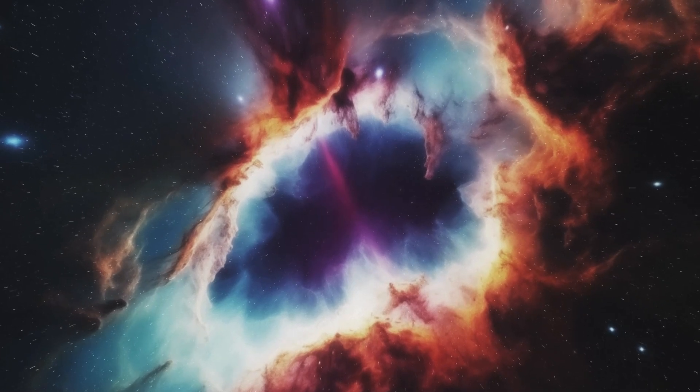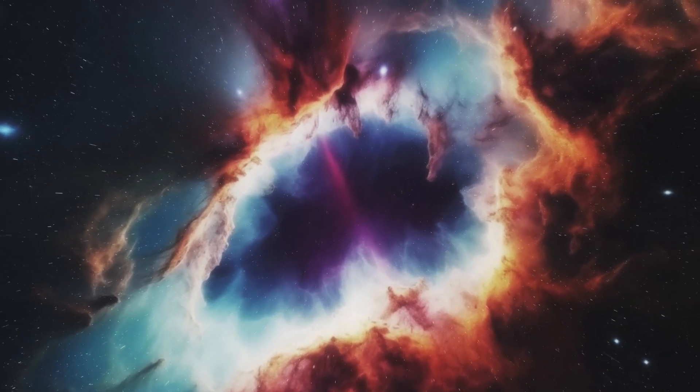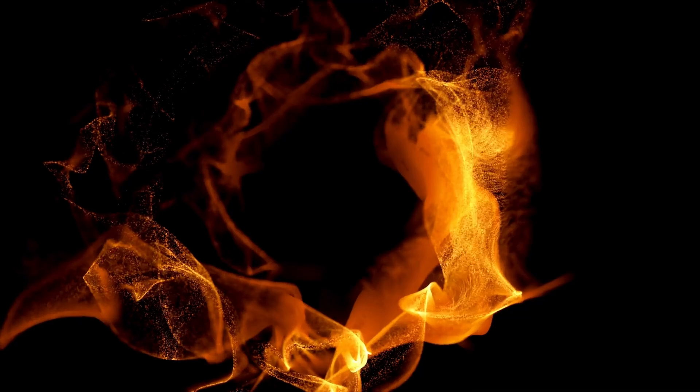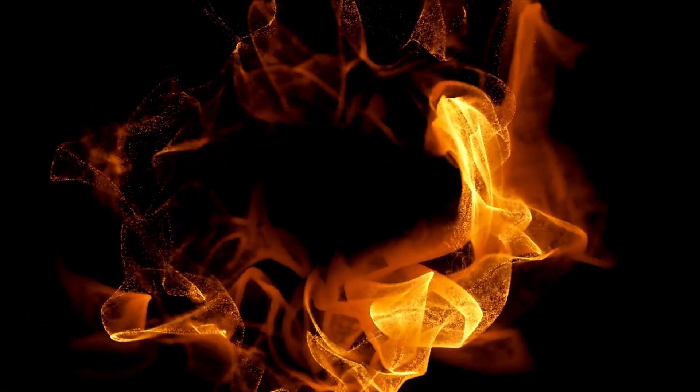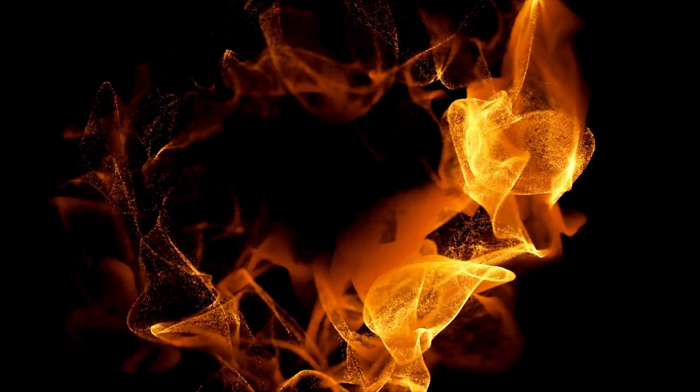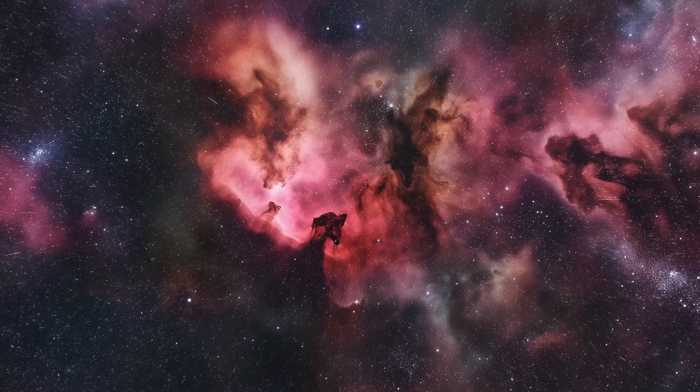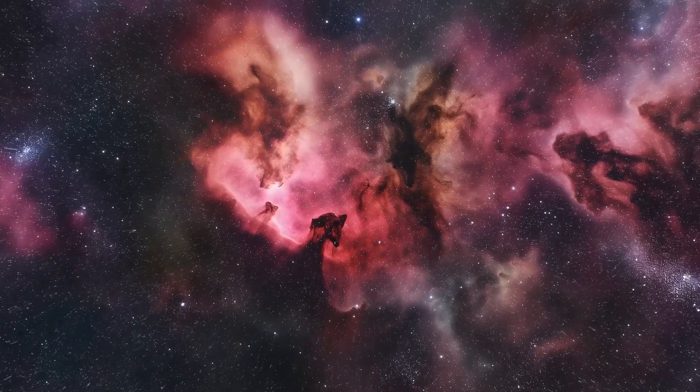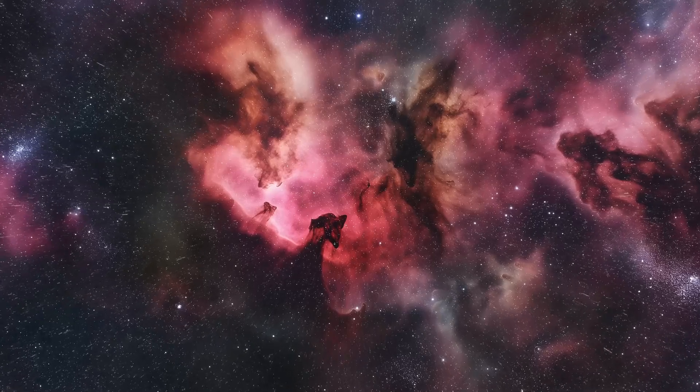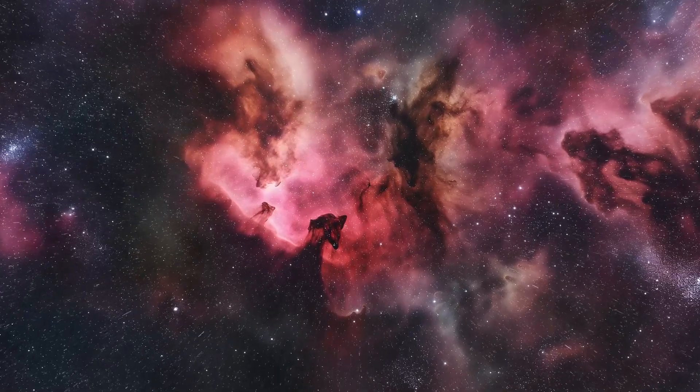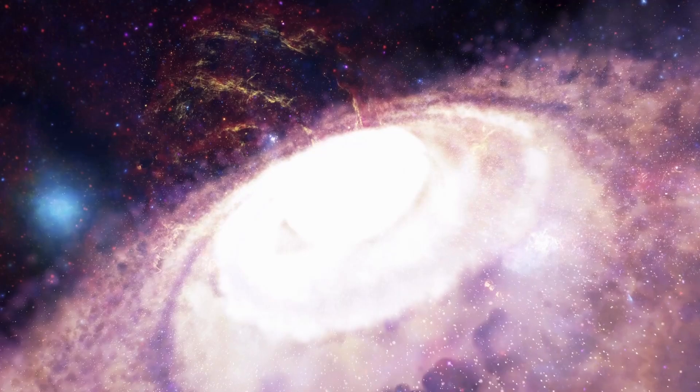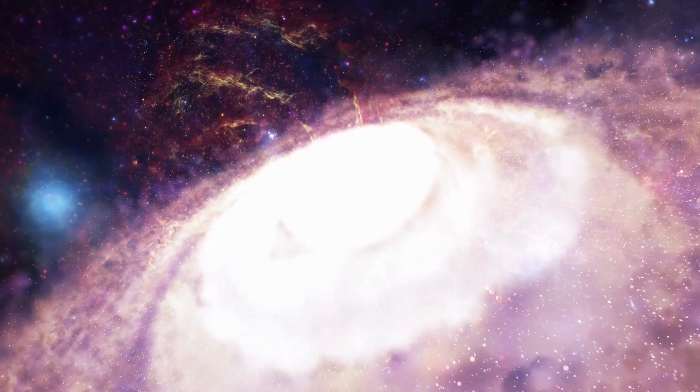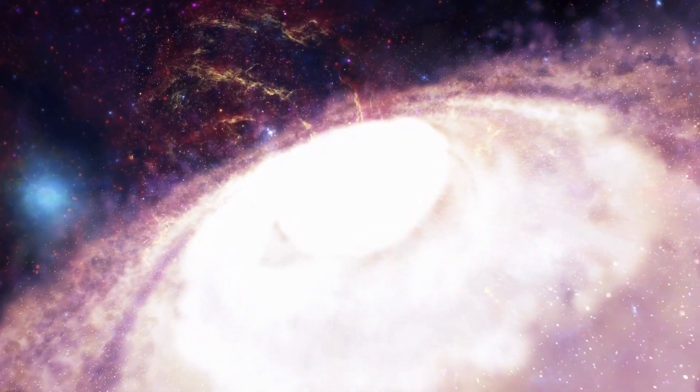Betelgeuse is a recognizable part of the constellation Orion, which is easily identifiable in the night sky due to its distinctive shape and bright stars. Also referred to as Alpha Orionis, it holds the title of the most brilliant and biggest star in this constellation.